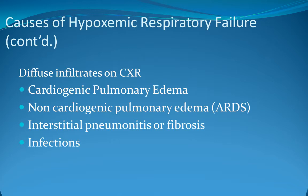Using the silhouette sign, the anatomical location of consolidation can be determined based on which contours are obscured: along the mediastinum for upper lobes, heart border for middle lobes and lingula, and diaphragm for lower lobes. Underlying emphysema may also cause focal lucencies within the consolidation and should not be confused with cavitation. Comparison with previous chest radiographs or CT scans is helpful.